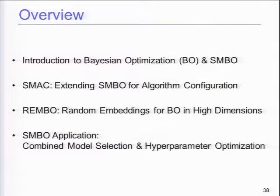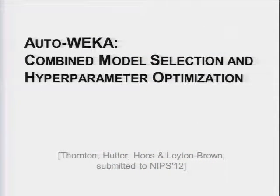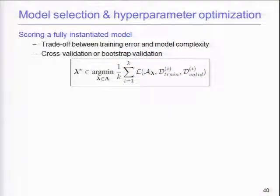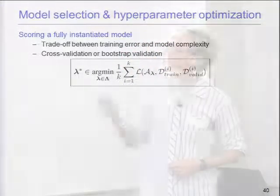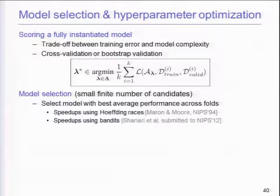Moving on to another application of SMBO: automated model selection and hyperparameter optimization at the same time. Related work on model selection goes back to Merrin and Moore using hoeffding races, with a small finite set of candidates. The goal: score a fully instantiated model using cross-validation — apply a learning algorithm with some parameters to a training set and validate on a validation set. Very much like James' setting, you want to find the best parameter setting and the best algorithm too.